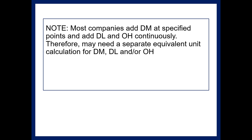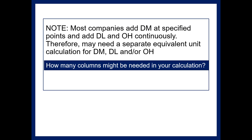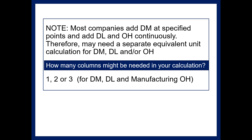Most companies add materials at specified points — often at the very beginning of the process. For Campbell's Soup, they would add the vegetables at the beginning, then process with labor and overhead throughout. You may need a separate calculation for direct material, direct labor, and overhead for equivalent units. When working a problem, identify how many columns you need — up to three: one each for materials, labor, and overhead. We'll look at how you determine that when we work our example.